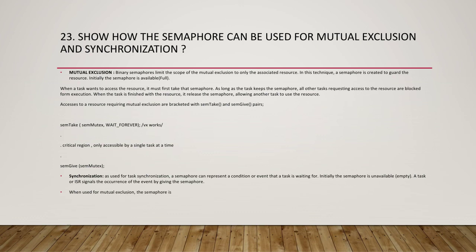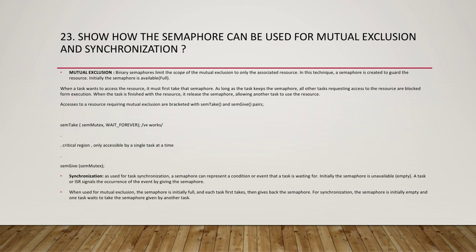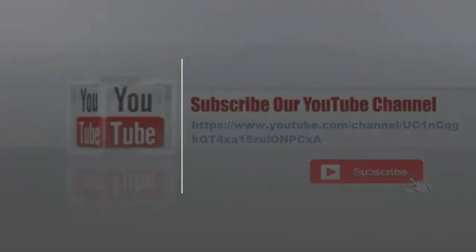To summarize: for task synchronization, a semaphore represents a condition or event a task is waiting for. For mutual exclusion, the semaphore is initially full and each task first takes then gives back the semaphore. For synchronization, the semaphore is initially empty and one task waits to take the semaphore given by another task. Please subscribe if you have not subscribed to our channel. Thank you.